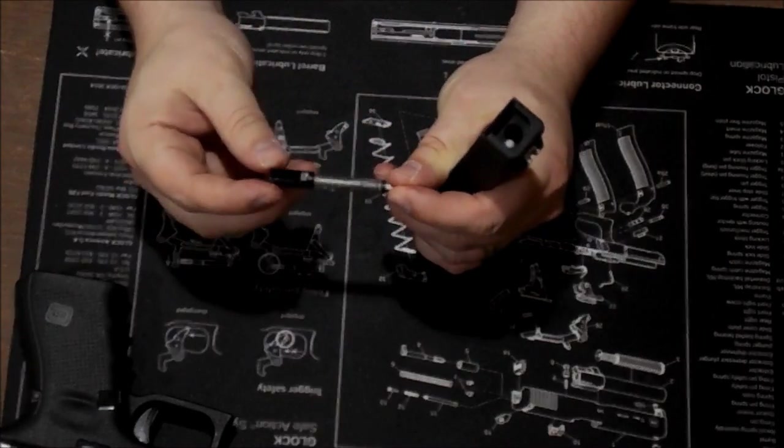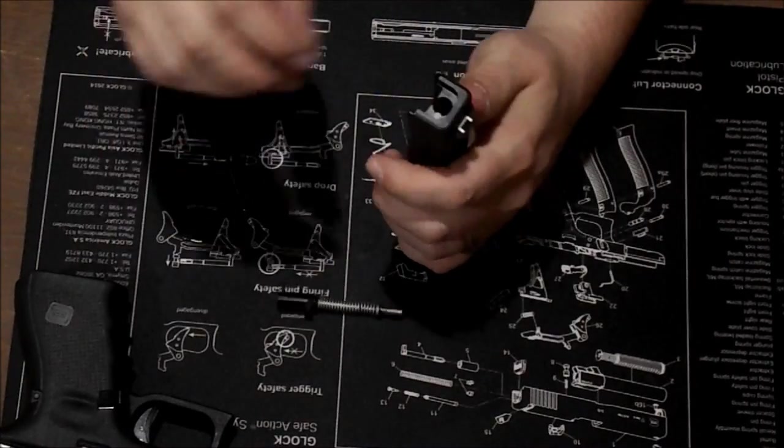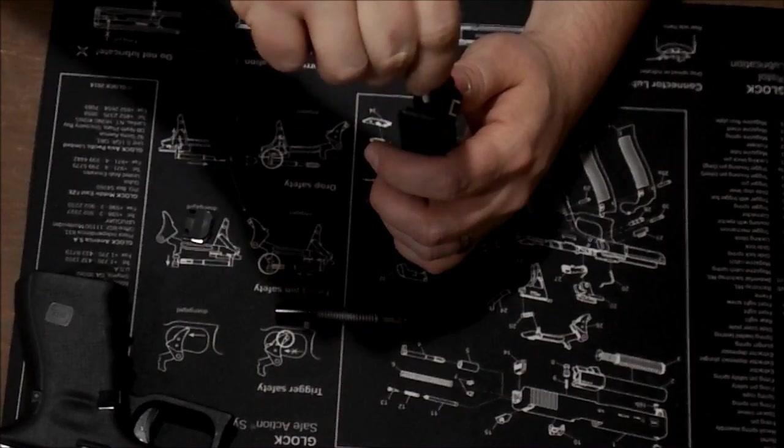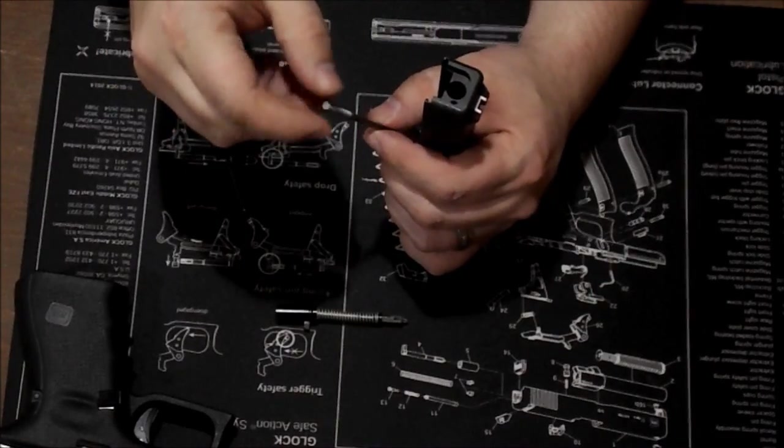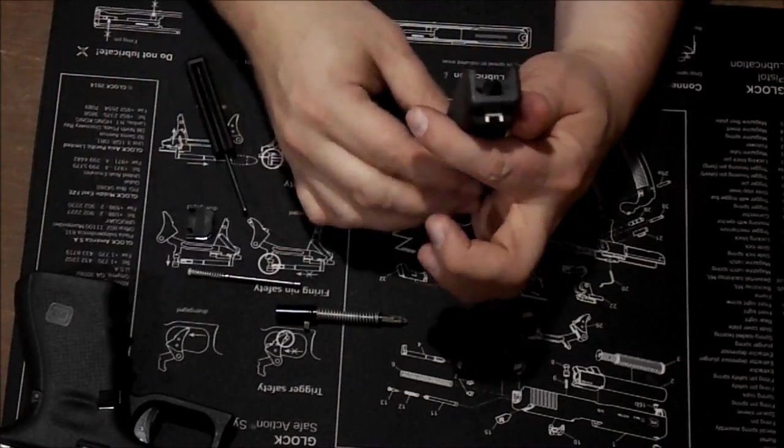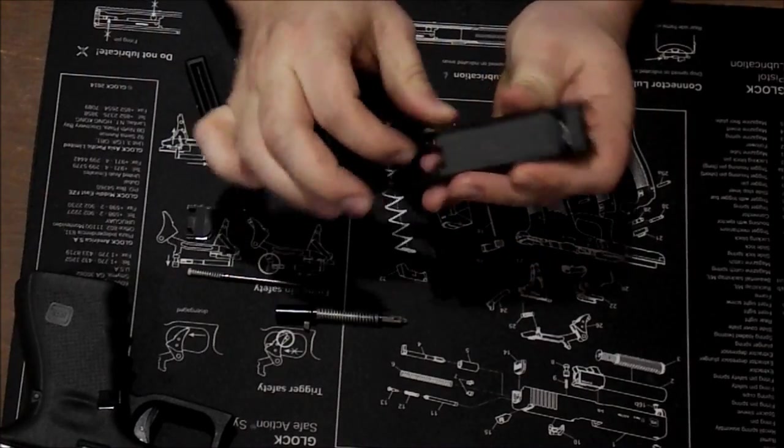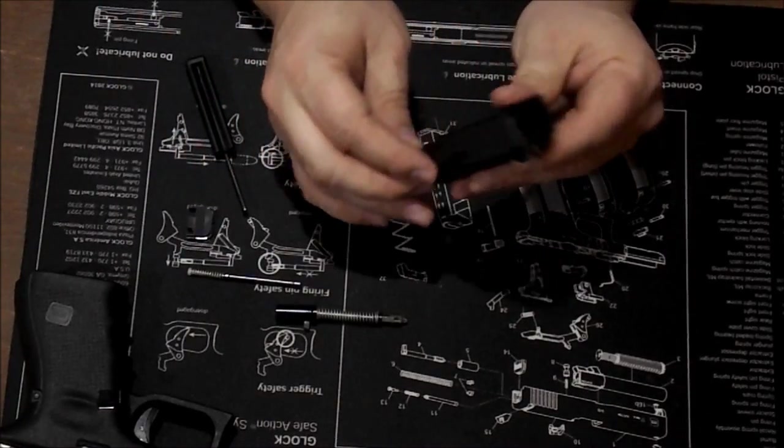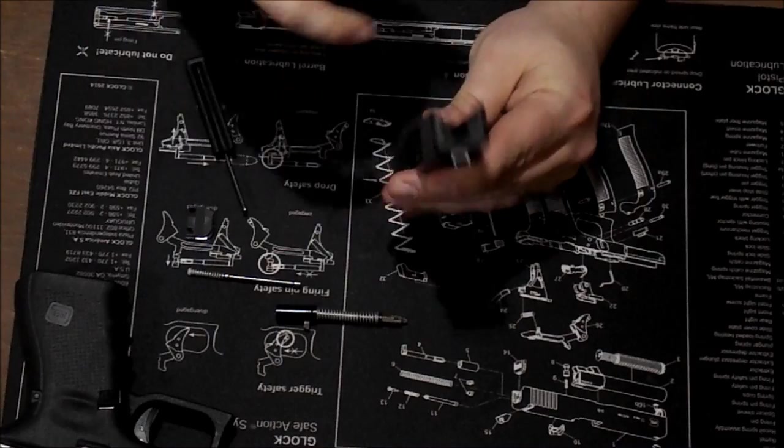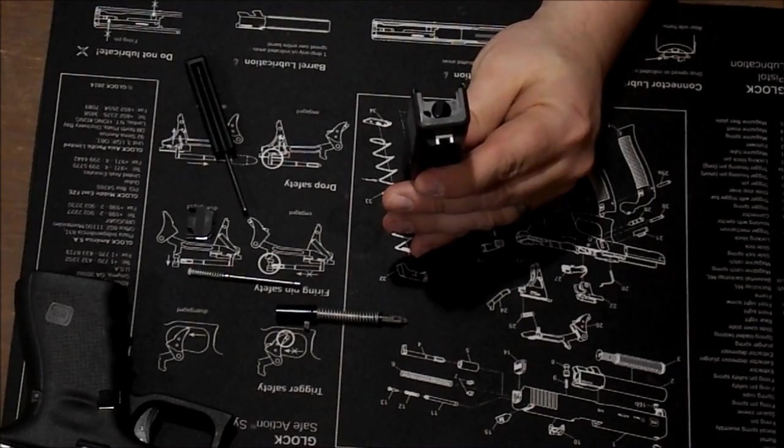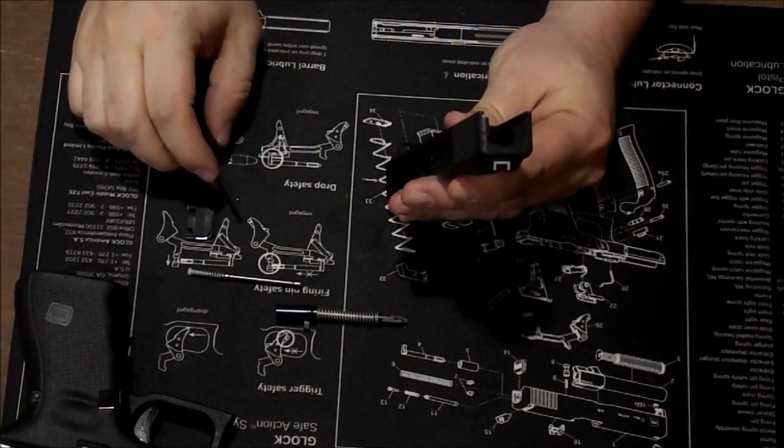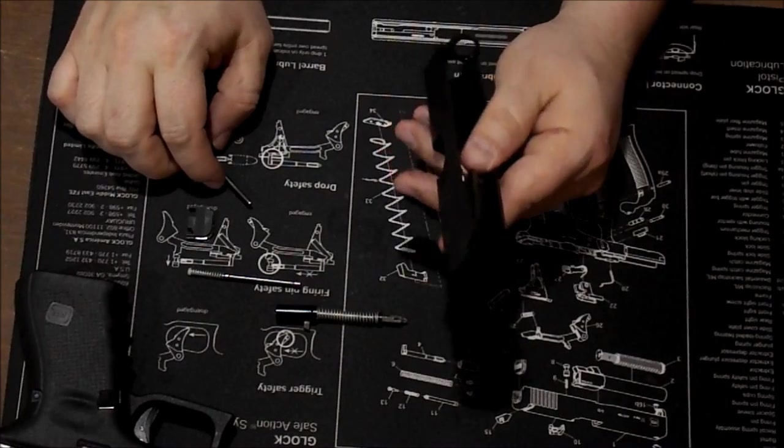And then you can remove your striker. You have your striker and its components, and then your extractor pin and a spring. You don't want to let that go flying. And then your extractor is sitting in there still. And then there's a small sleeve down in there. We just leave that in there. If it comes out, it's not a big deal, but not a big thing.